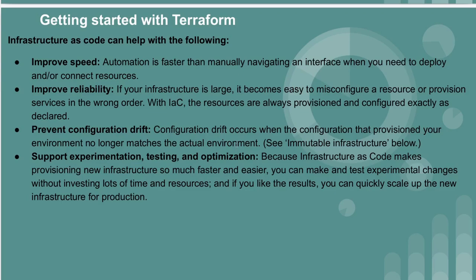Another benefit is preventing configuration drift. Configuration drift occurs when the configuration that provisioned your environment no longer matches the actual environment. For example, if you created a VPC with two subnets, two route tables, two security groups, and two instances, but later made changes that caused a mismatch between the Terraform state file and the actual resources in AWS — that is a configuration drift issue.